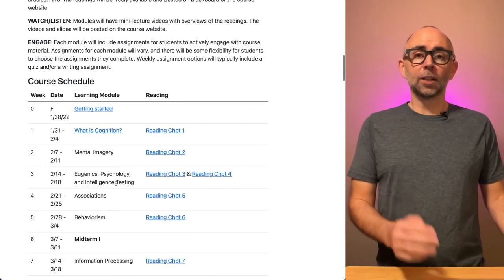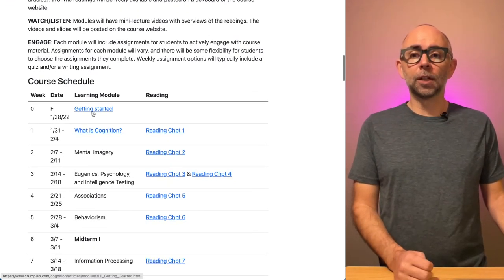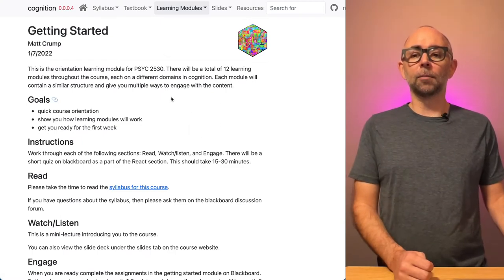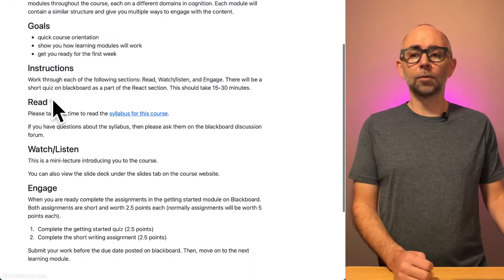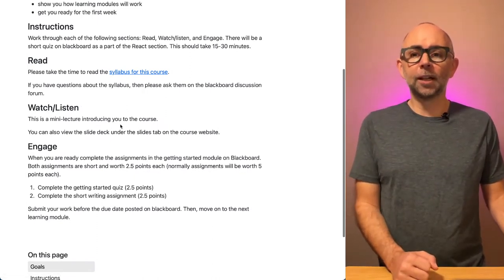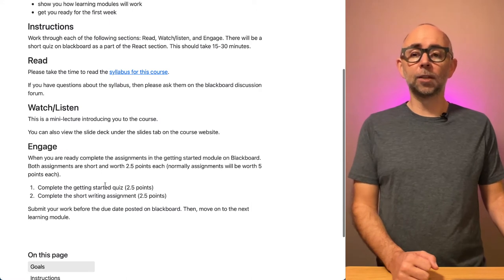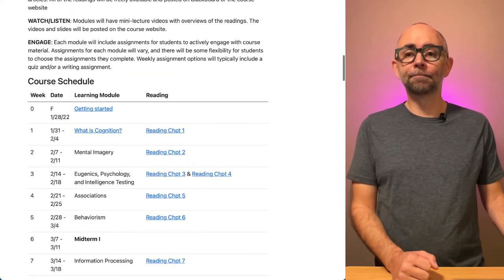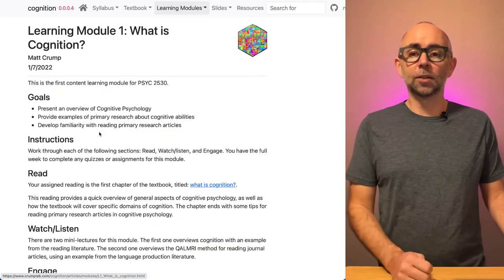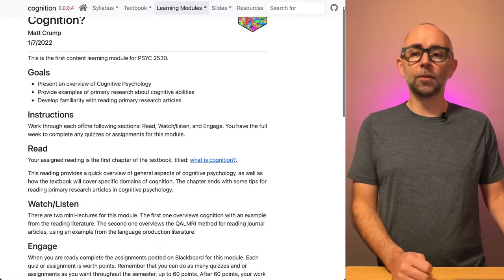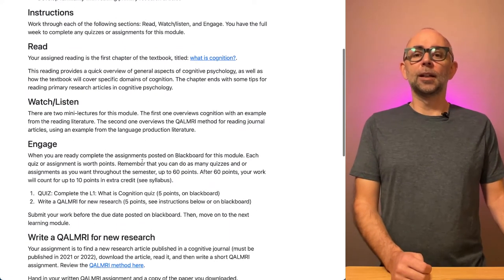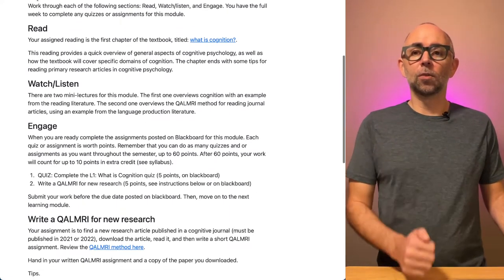If you're wanting to get started on a module, you can click Getting Started, and you'll be taken to the learning module information. You can follow along, do the readings, watch and listen to this lecture. That'll be posted here after I'm done making it. And then engage by doing a quiz or a writing assignment. Once you're done with this learning module, move on to the next one. So here's the What is Cognition module. You can read some stuff, watch and listen to some lectures, and then engage by doing a quiz or a writing assignment.